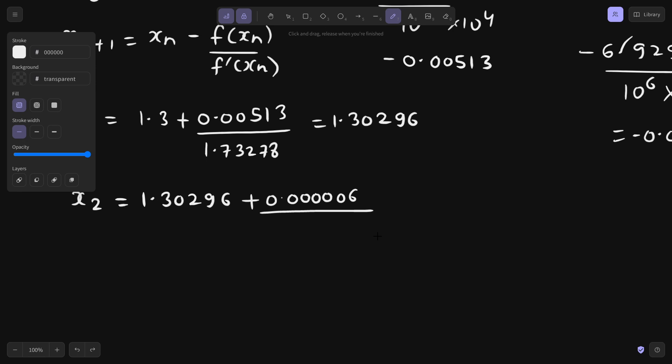1 divided by 1.30296 plus sine of 1.30296. This is 1.73182. Let's calculate this overall value. It's taking time because I'm calculating all the values manually, although with the help of calculator but step by step. So 1.30296 plus 0.000006 divided by 1.73182. This is coming out to be 1.30296.